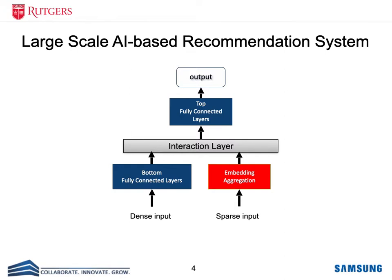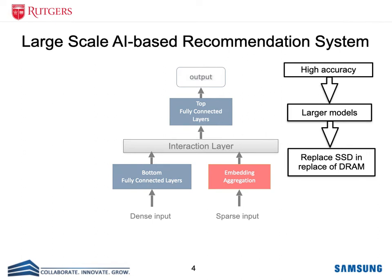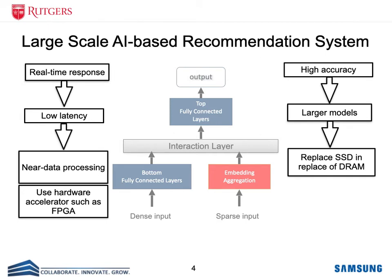Now let's review the main requirements for this system. This system needs to predict the user's interest with high accuracy. To achieve this high accuracy, they often deploy large models with large embedding tables. Often, the size of these embedding tables exceeds the size of the main memory in many servers. Therefore, prior work started to use alternative storage options such as SSD to replace the DRAM-based system. Another important requirement is low-latency — the system needs to respond to user requests in real-time. One proposal to achieve low-latency is by doing computation near the data to minimize data traffic, and another solution is to use hardware accelerators such as FPGA to improve performance.